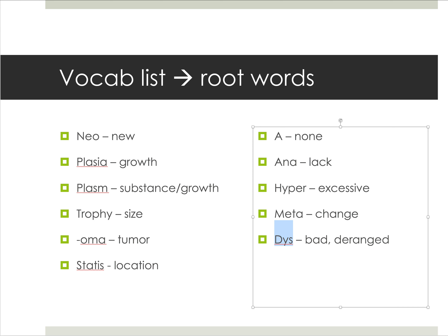These root words are here for your knowledge so you can put words together and understand what we're talking about. Another important thing we'll go through are the germ cell layers: the ectoderm, endoderm, and mesoderm. These germ cell layers are how cancers are characterized. If something originates from the mesoderm, which is typically muscular-related, it has a specific name. Knowing root words and germ cell layers will help you distinguish what type of tumor to expect.